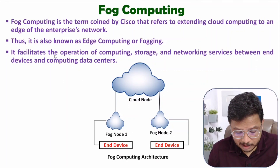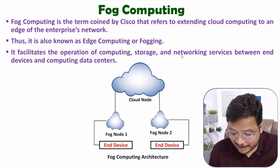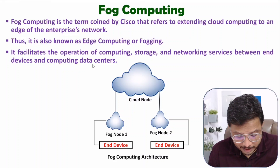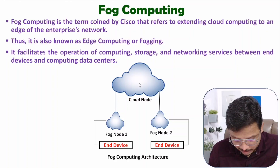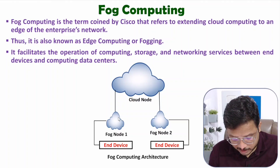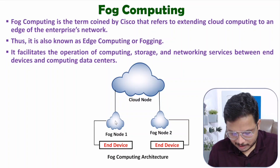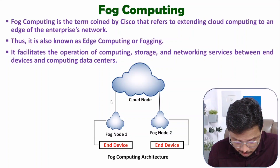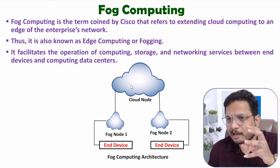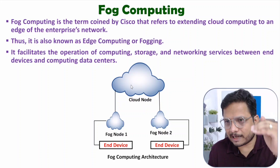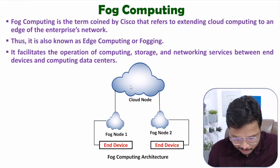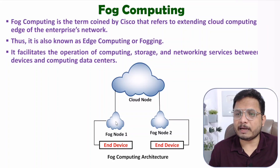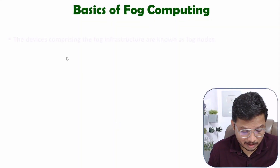Fog computing facilitates the operation of computing, storage, and network services between N devices and the computing data center. N devices access data from the data center using the fog node. Frequently accessed data is stored in the fog node, and data which is not frequently used is stored in the cloud. As and when that data is required, the N device accesses it through the fog node, with a bit more latency for infrequently used data.